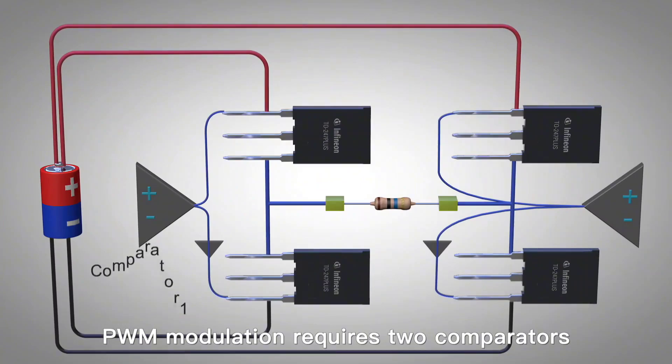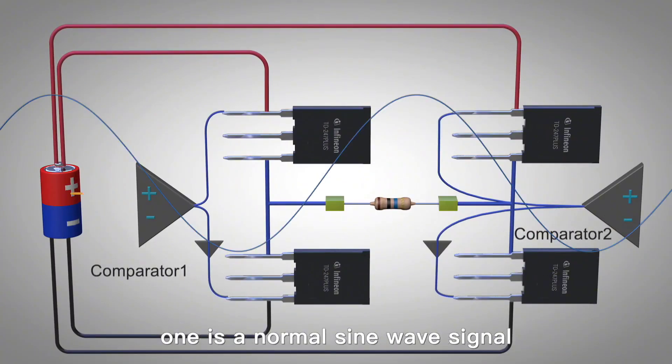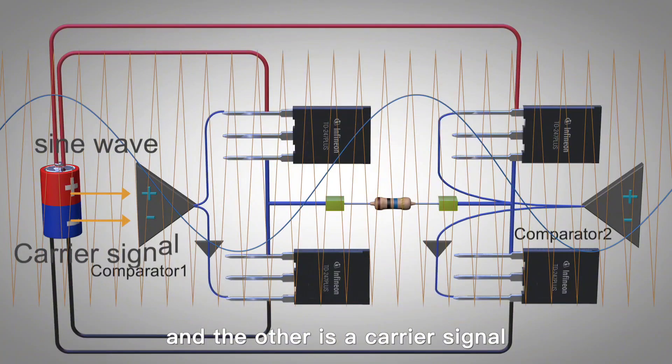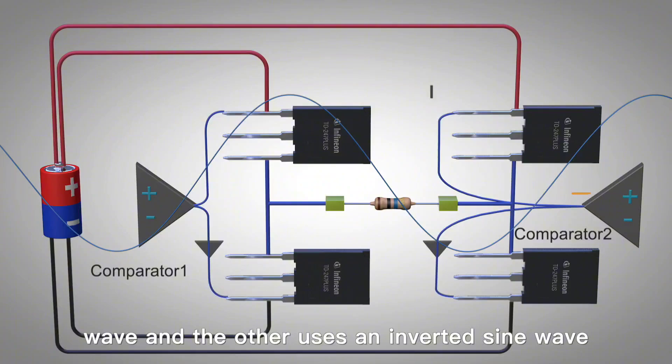PWM modulation requires two comparators. The two input terminals of the comparator, one is a normal sine wave signal, and the other is a carrier signal. The carrier signal usually uses a triangle wave. One comparator uses a normal sine wave, and the other uses an inverted sine wave.